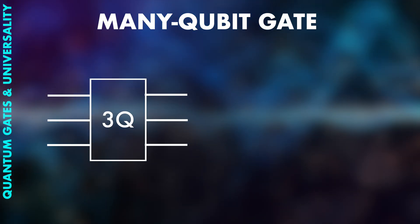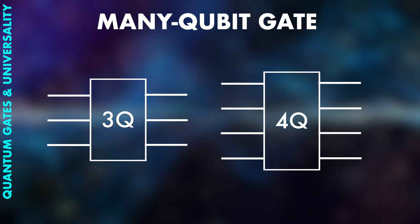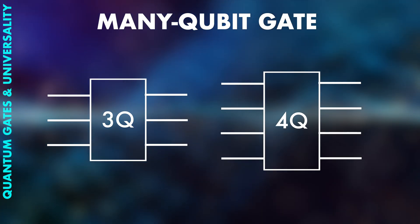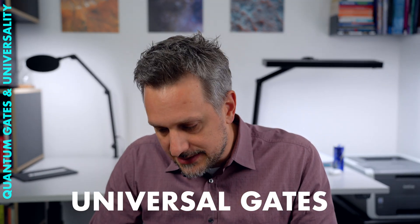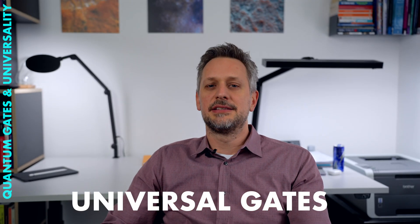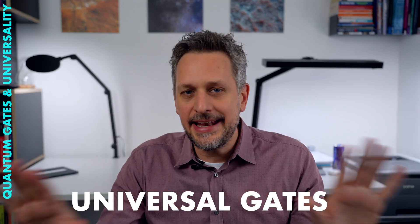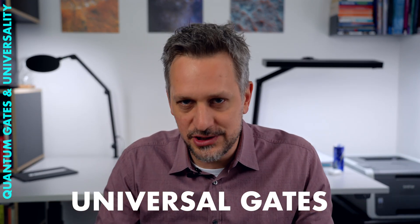Now, we can also go to three or four or even more qubit gates, but this is where universality comes in. We already know from classical computation that some sets of gates are universal. And what it means is that certain sets of gates can be used to recreate any other operation or combination of operations.